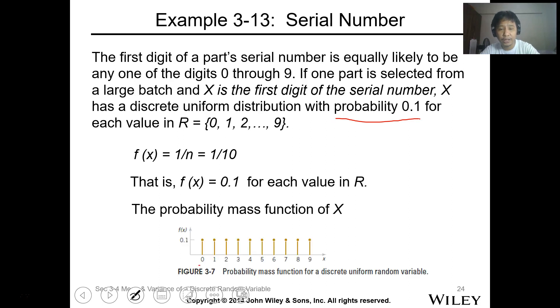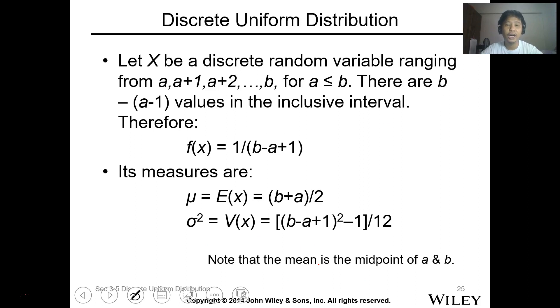If one part is selected from a large batch and X is the first digit of the serial number, X has a discrete uniform distribution with probability 0.1 because it's 10, 1 divided by 10 for each value in the range, which is your sample set 0 to 9. The f(x) or the probability is 1 over 10 or 0.1. We can plot this one as a uniform distribution. Now, if you have the distribution value from a to b, to reach b is a, a+1, a+2, and take note that b is always greater than or equal to a.